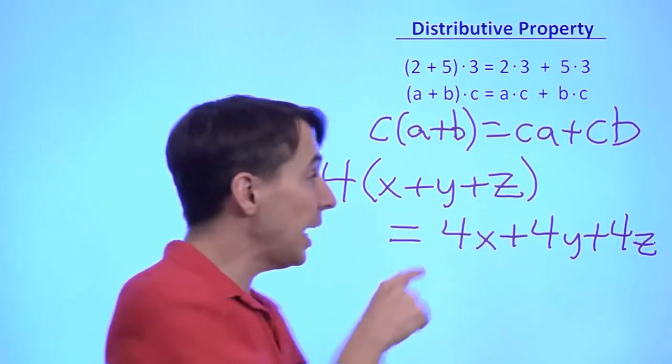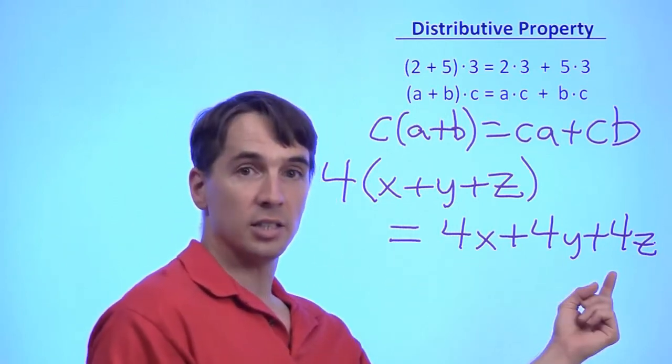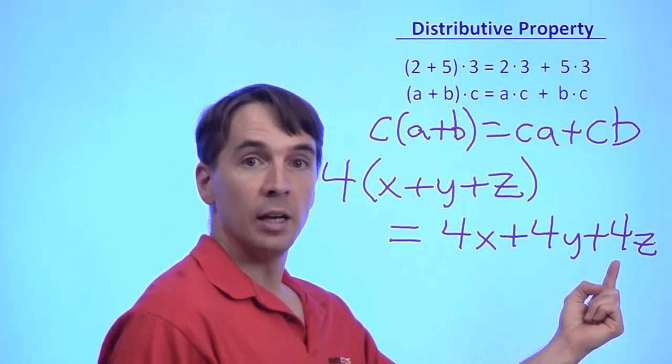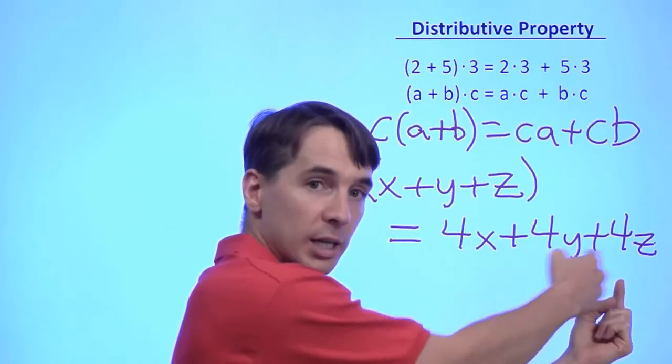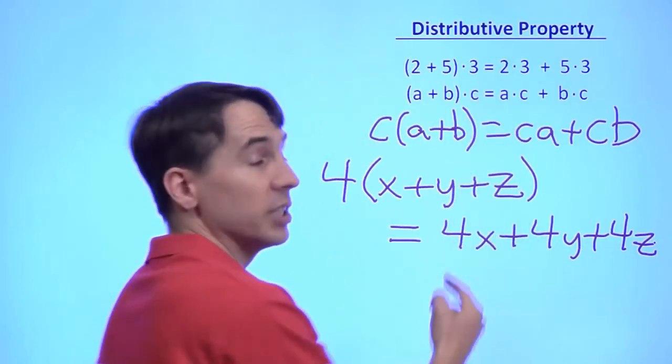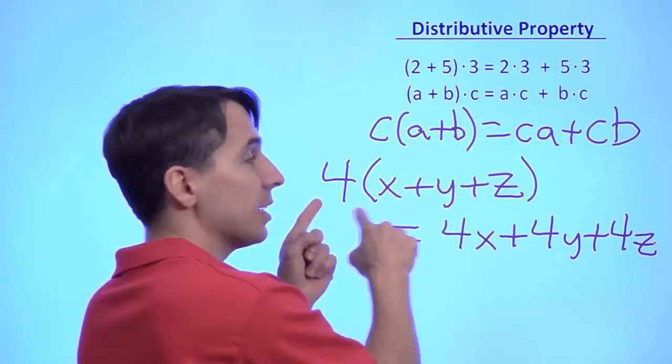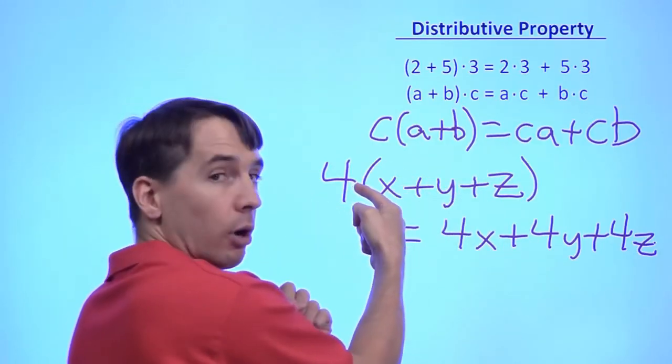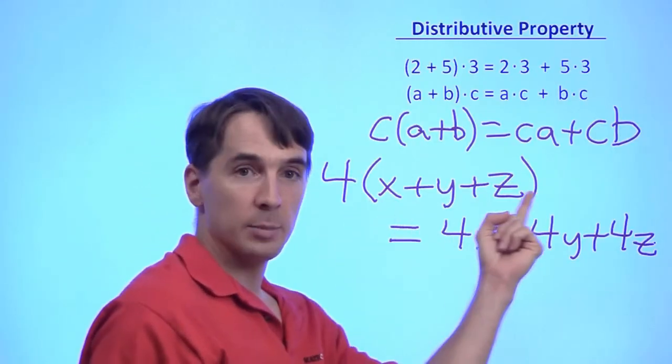And all I'm doing here is multiplying the four out here by each one of these terms. And that's what we do when we expand this product into this sum. Now, if we go the other direction, if we start with 4x, 4y, 4z, we see that there's a four in each one of these terms. We can use the distributive property to write it back as this product. And when we do that, we say we factor out the four and write it as four times this sum here.